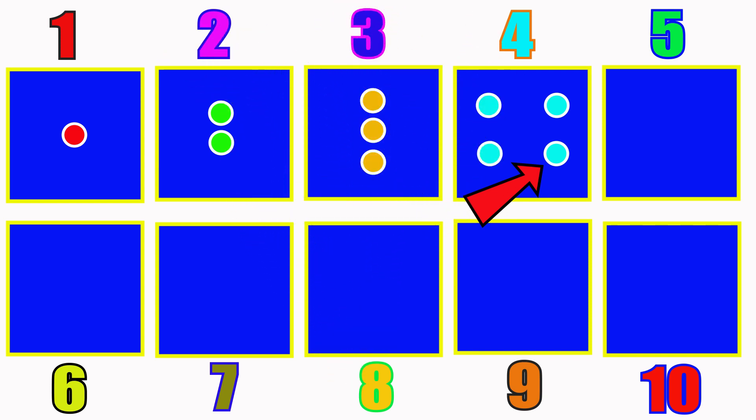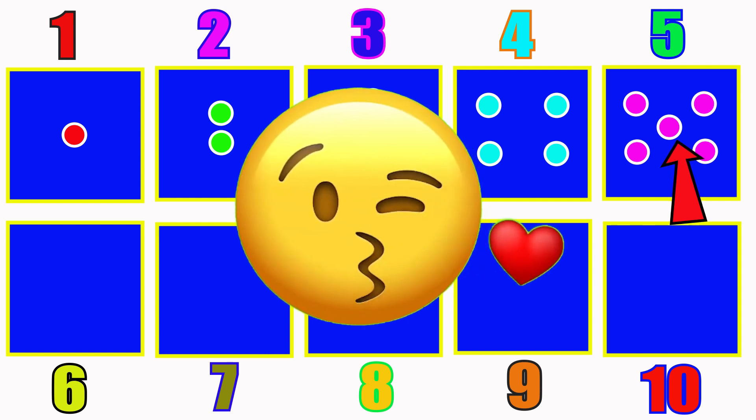Now here's the square with 5 dots. 1, 2, 3, 4, 5. Wow! You're learning fast!